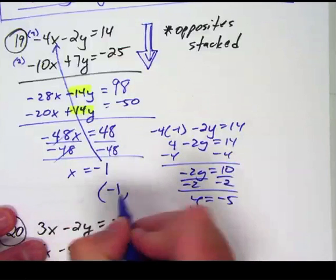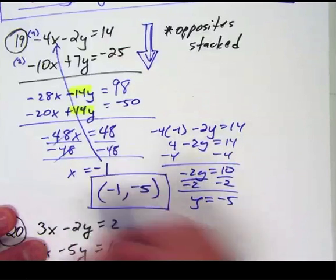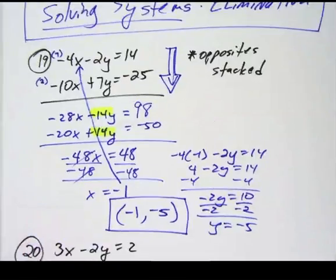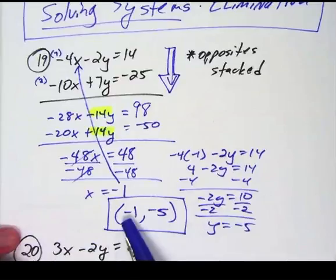My answer is negative 1 for x, negative 5 for y and that's the two points or that is the one point where those two lines cross. That's their point of intersection that solves the system as negative 1, negative 5.